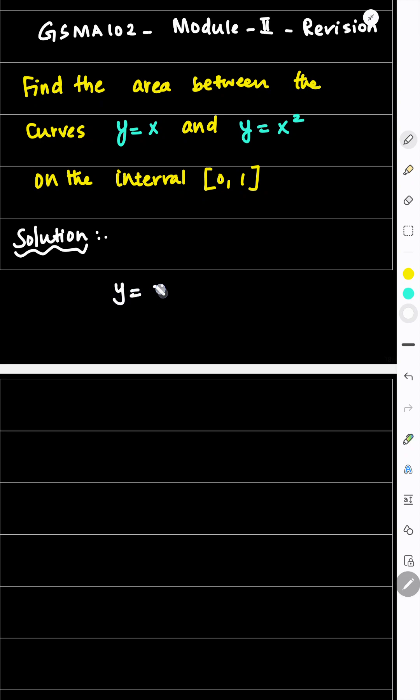So what are the curves given? y equals x and y equals x square. Let us sketch this curve first. y equals x is a straight line passing through the origin.